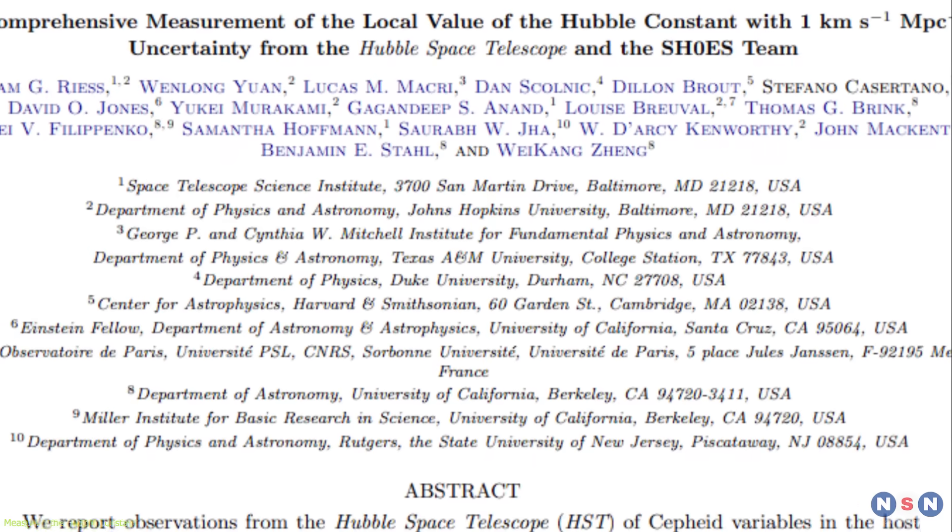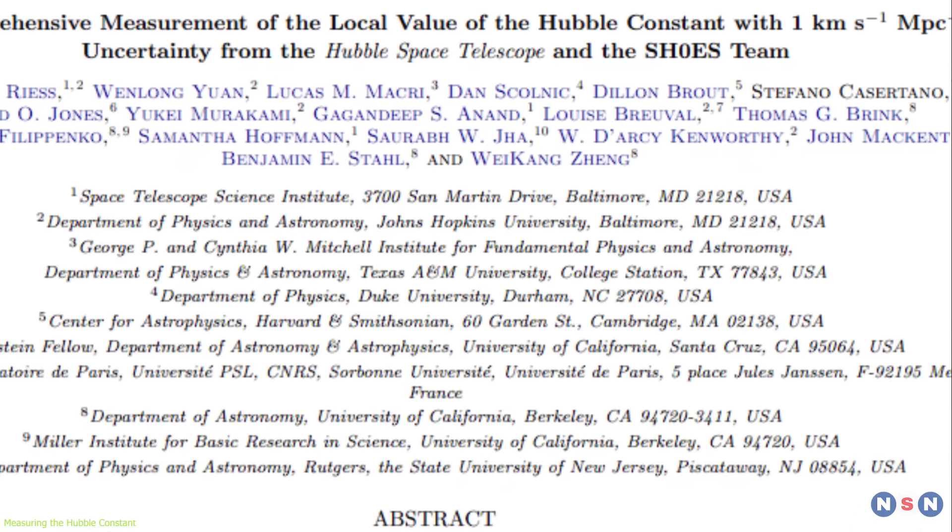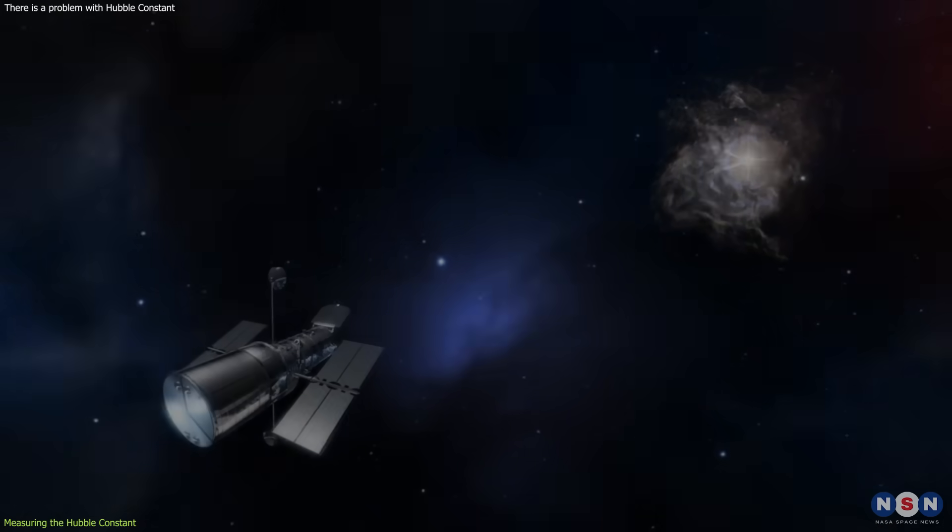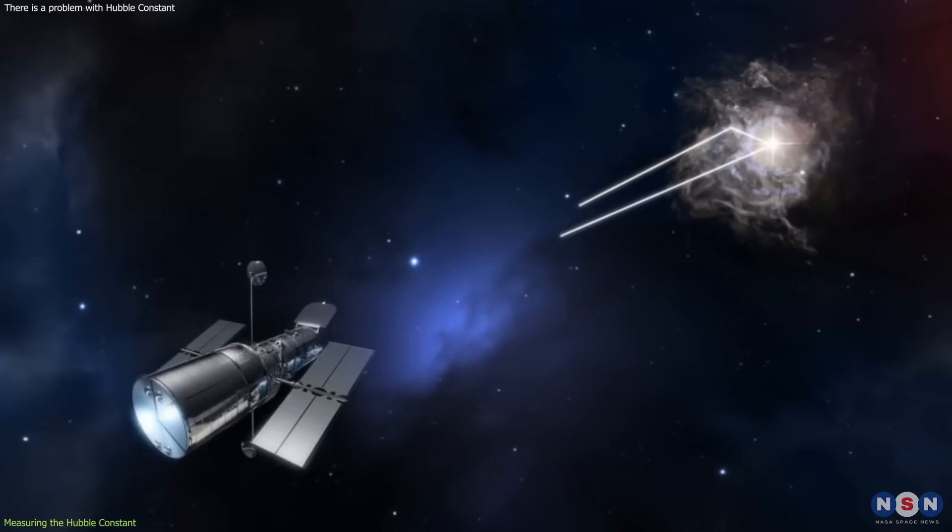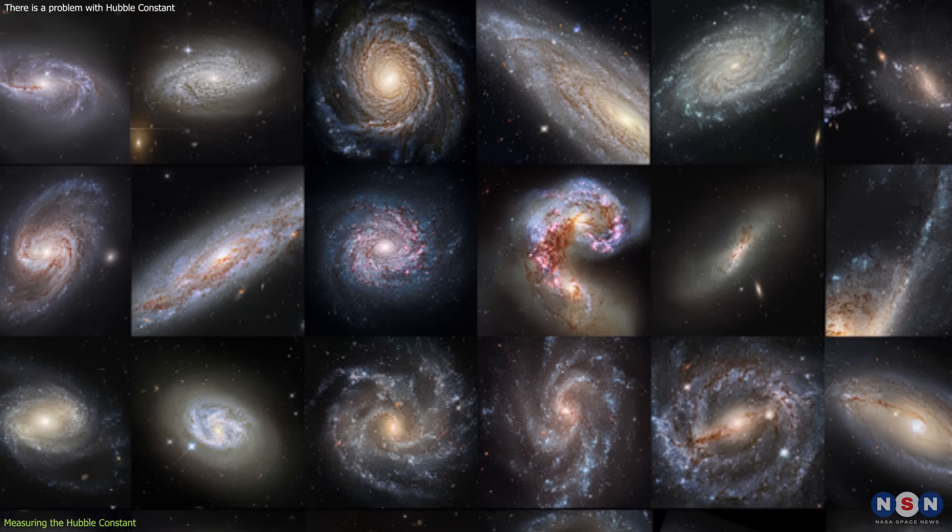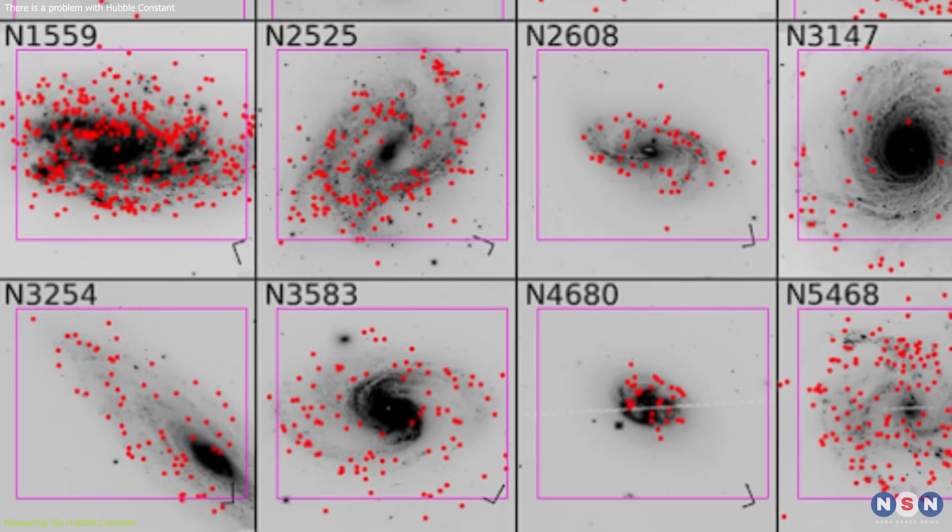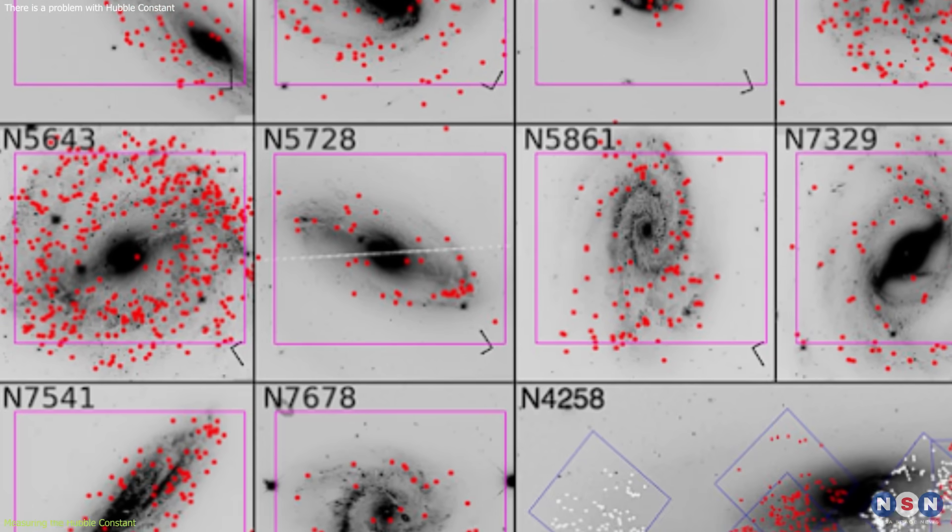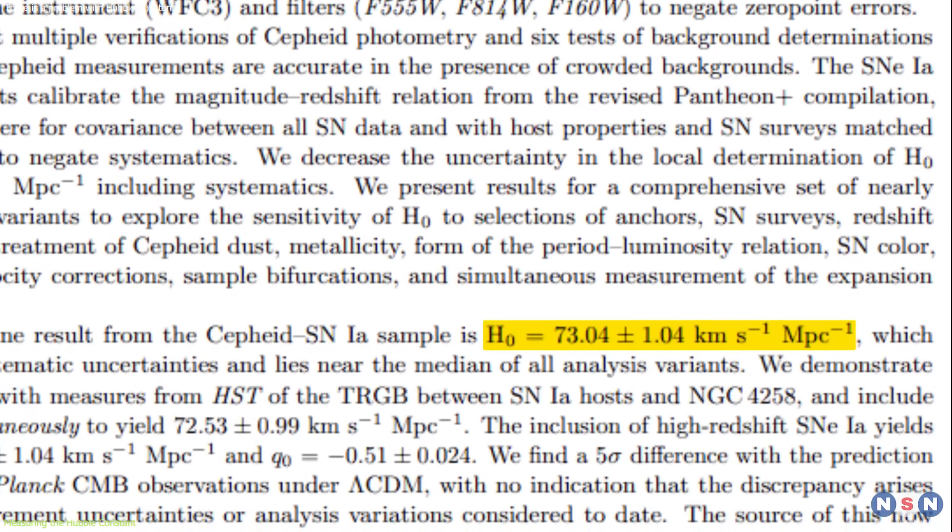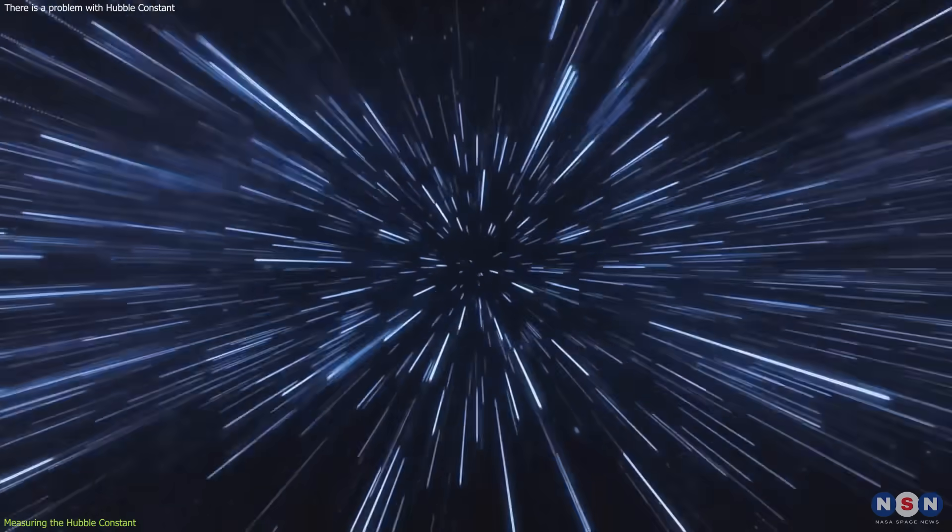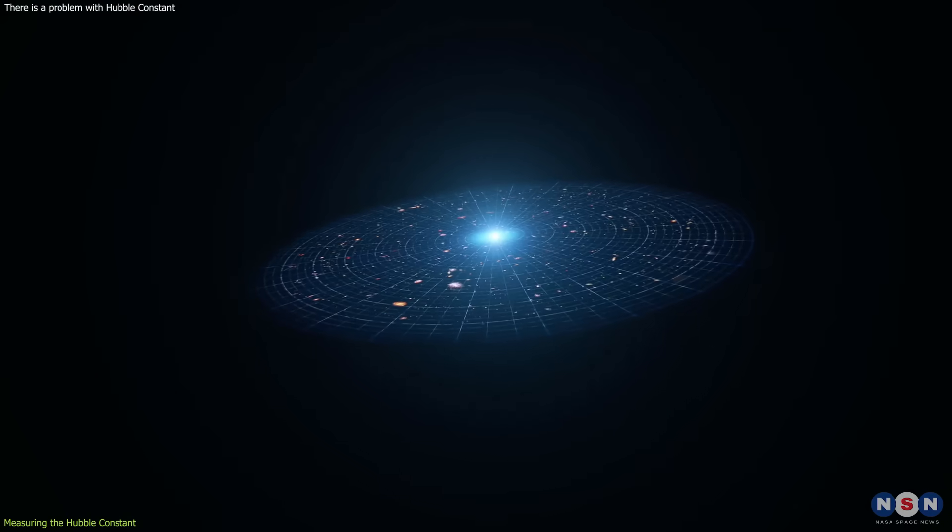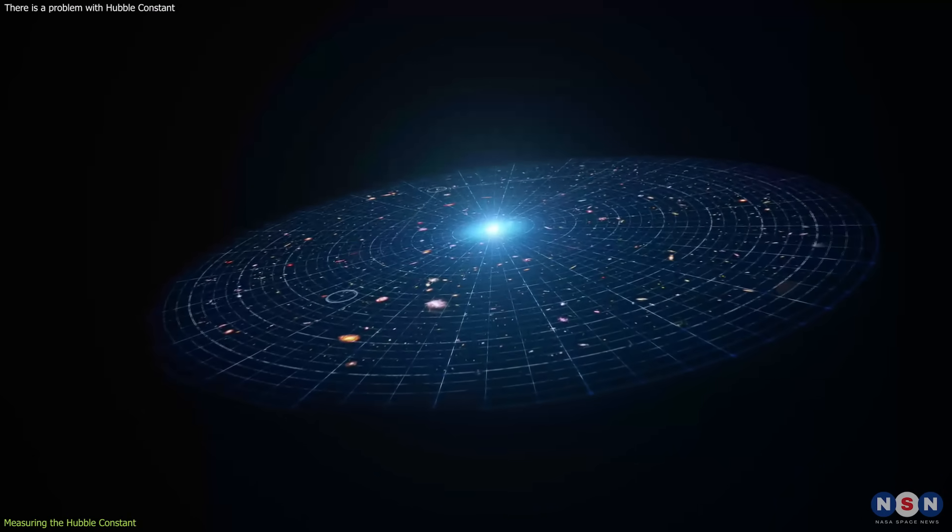The latest study that used this method was led by a team of astronomers from the SH0ES, or Supernova H0 for the Equation of State project, which used the Hubble Space Telescope to measure the distances to Cepheid variable stars and type 1A supernovas in different galaxies. The study used the most precise and accurate data available, and found that the Hubble constant is about 73.2 kilometers per second per megaparsec, which means that for every 3.26 million light-years of distance, the universe is expanding by 73.2 kilometers per second.